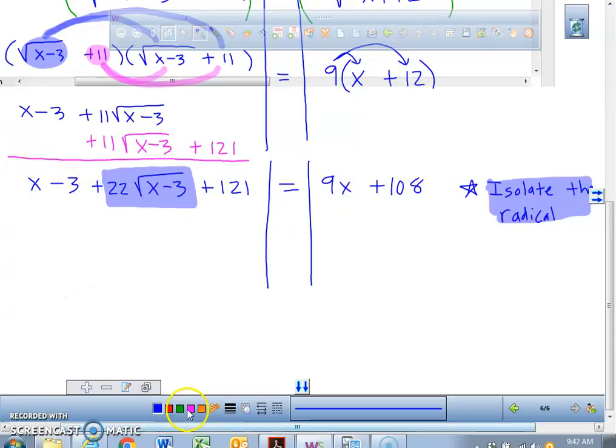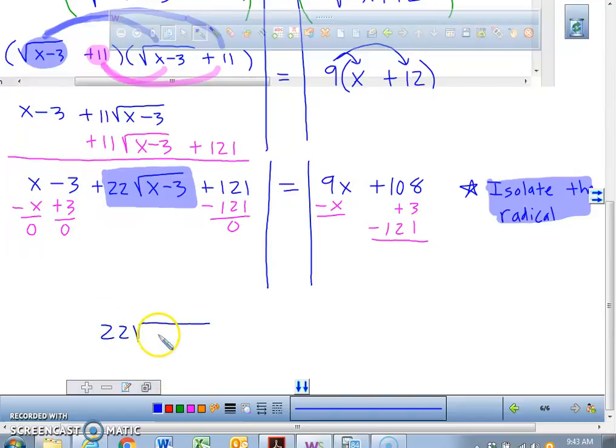Over here, we have an x. So what I'd like you to do is we're going to take away an x, add a 3, and take away 121. That's not the only way you can do it. I'm showing you removing everything over here to the right. These are all additive inverses of each other. And all I want left on the left-hand side of the equal sign is 22 times square root of x minus 3.